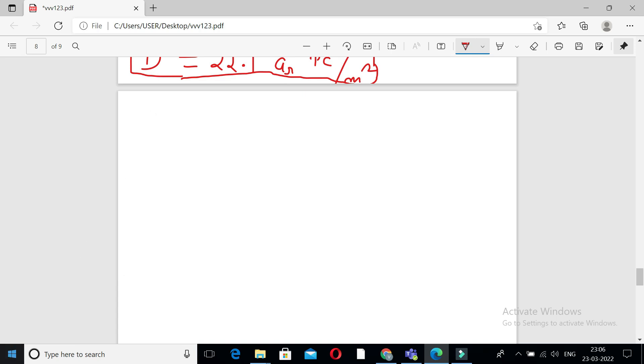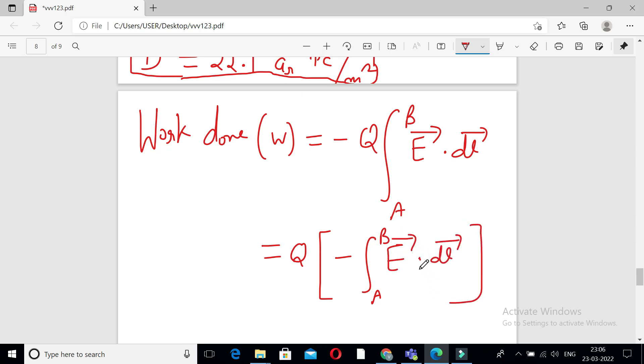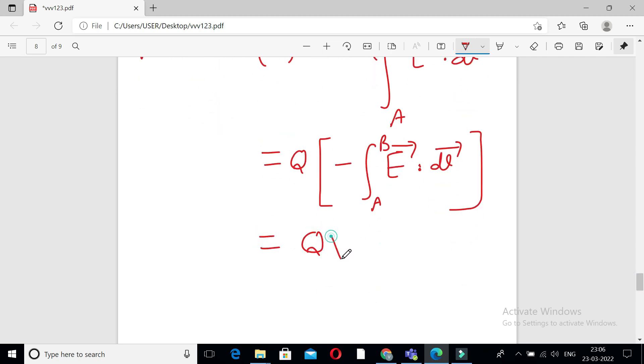Now we know work done is equal to W, this is equal to minus of Q integral A to B E dot dl. And we know if we separate out the values, we know this is the value of VAB, Q into VAB we can write Q into VB minus VA.